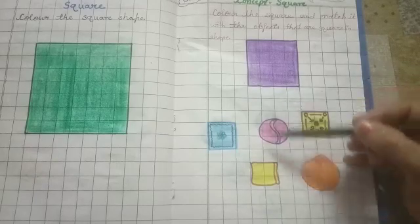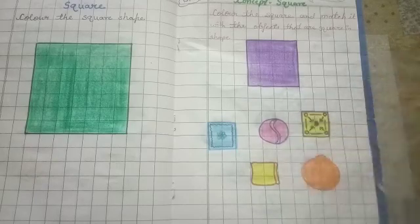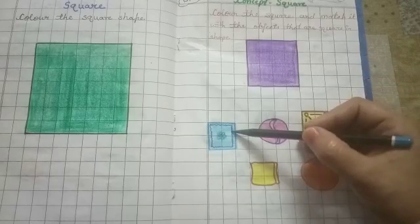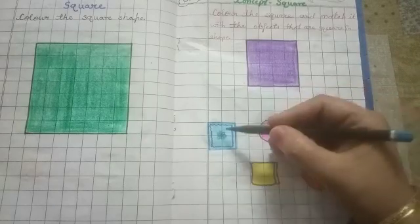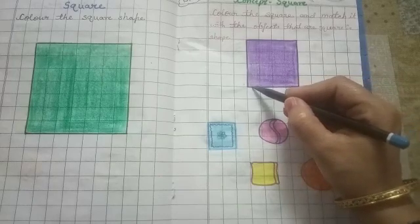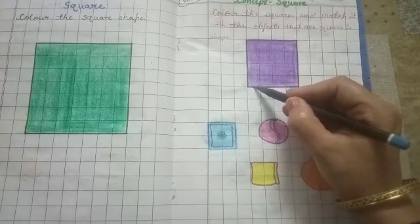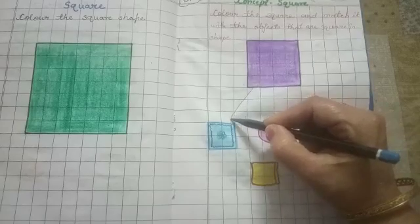Okay. You will see square shape. This one is square. Yes. Hanky is square. So, you will match this square. Okay.